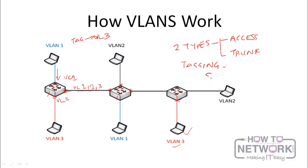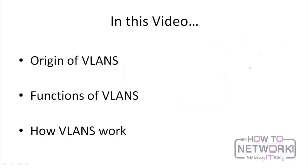Tagging is done through a standard called 802.1Q. There used to be another standard created by Cisco, but it has been phased out. Now we just have the open-source Ethernet trunking standard, which is 802.1Q. We're going to look at trunking, tagging, and how you can replicate VLANs and other advanced features in the next video. In this video, we have been able to look at the origin of VLANs and why VLANs were introduced to segment the LAN. We also looked at the functions of VLANs: logical segmentation, segmentation of broadcast domains, security, and quality of service. And we've looked at how VLANs work on a switched network, and how switches use tagging to decide where to send frames based on the VLAN configuration.